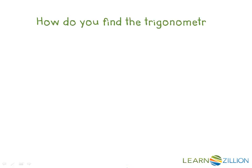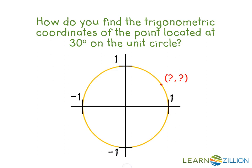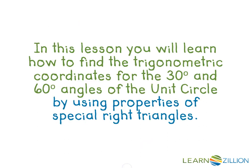How do you find the trigonometric coordinates of the point located at 30 degrees on the unit circle? In this lesson, you will learn how to find the trigonometric coordinates for the 30 and 60 degree angles of the unit circle by using properties of special right triangles.